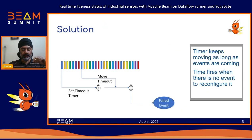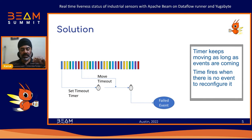Here you can see the actual solution and how we've utilized this feature. The different colors represent different sensors sending events at particular times. When the first event comes in from a sensor, we set a timer in Beam. The timer is set in the future — in this case at 15 seconds. Once that timer goes off, it will go ahead and mark that particular sensor as failed. That is the action the timer performs.